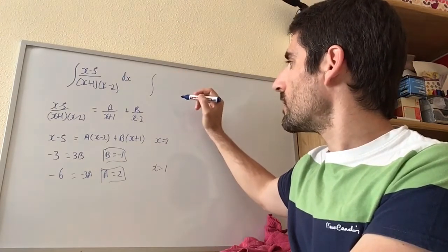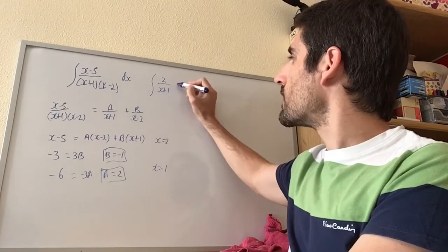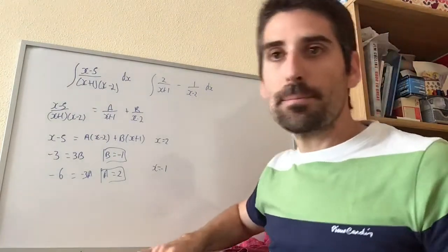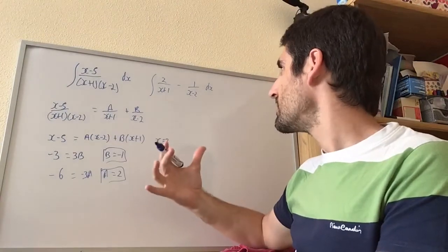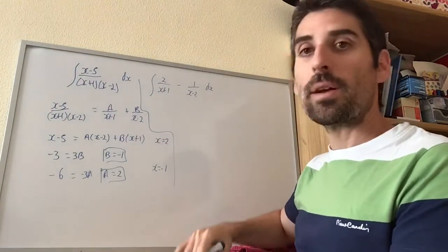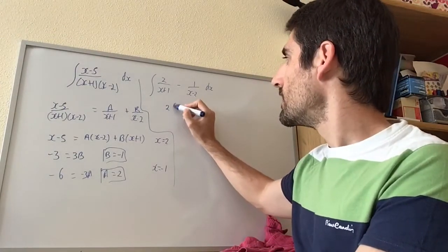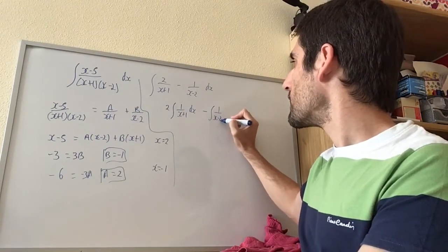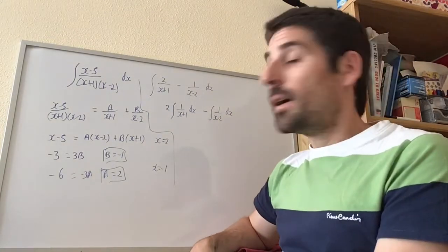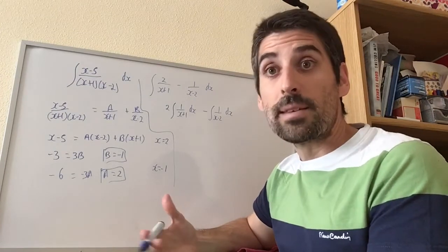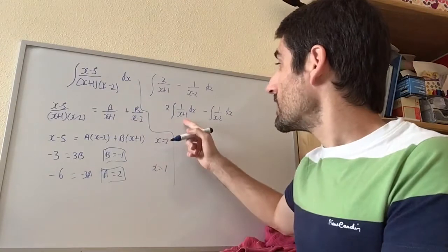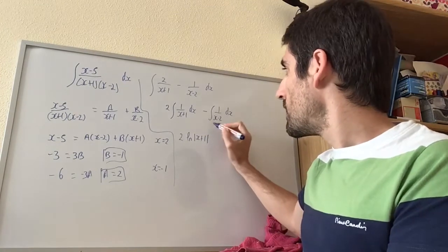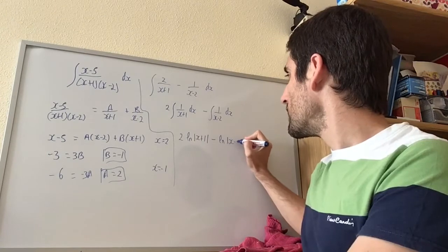So the integral of that is the same as the integral of 2 over (x plus 1) minus 1 over (x minus 2) dx. We can break that into two integrals: 2 times the integral of 1 over (x plus 1) dx, minus the integral of 1 over (x minus 2) dx. Remembering that the integral of 1 over x is log x, this gives 2 log|x plus 1| minus log|x minus 2|.